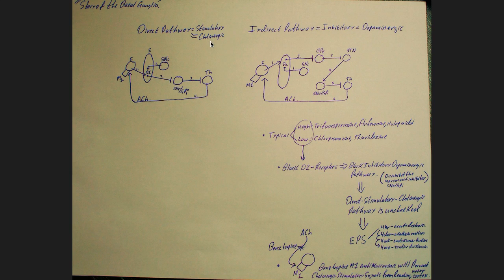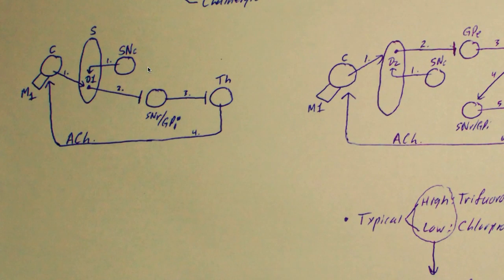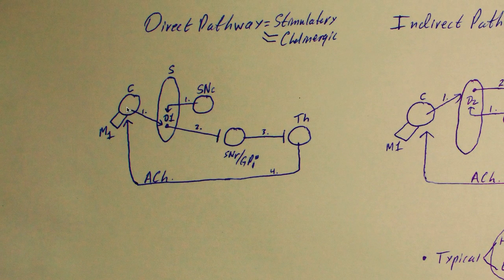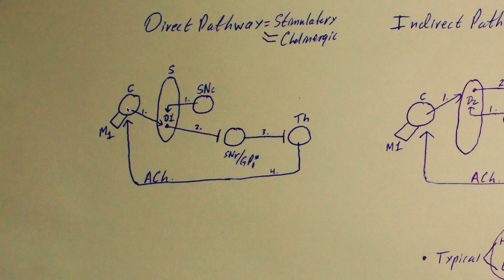This is the stimulatory or cholinergic pathway. The cortex sends a stimulatory signal to neurons in the striatum. These neurons have dopamine 1 receptors on them, so they receive a dopamine signal from the substantia nigra at those dopamine 1 receptors.